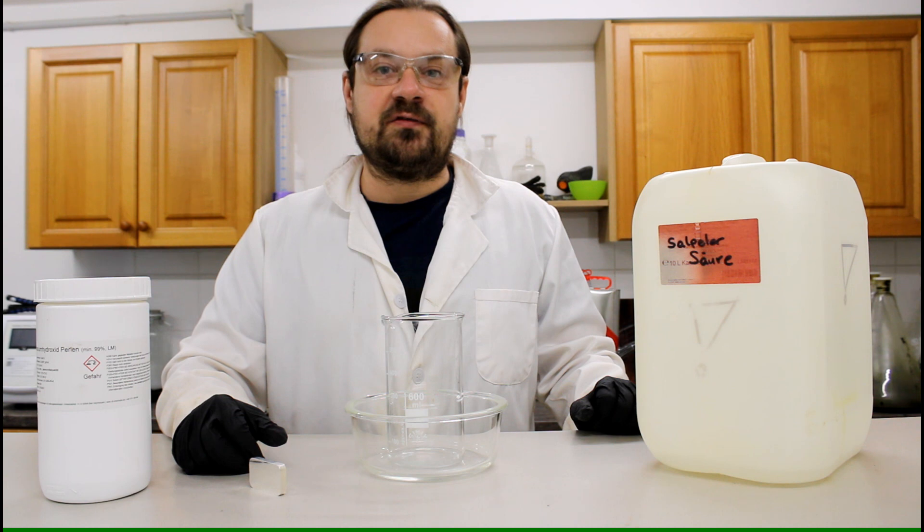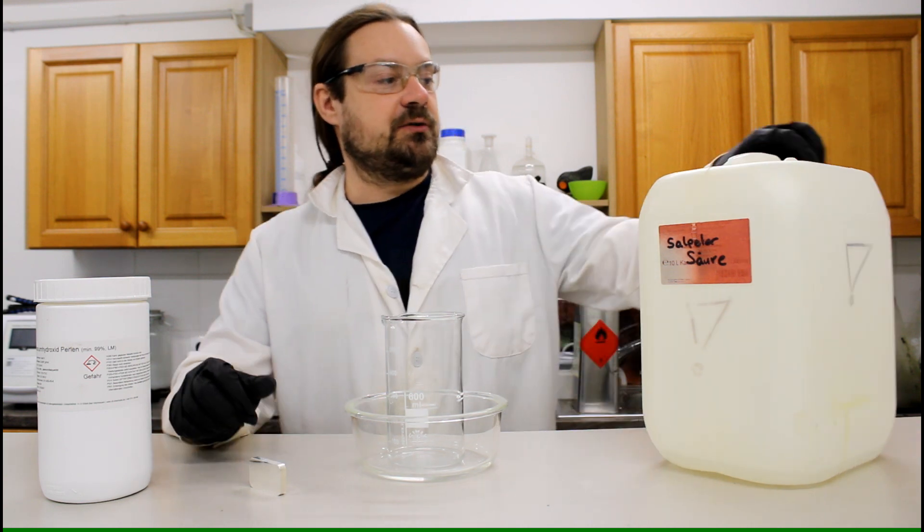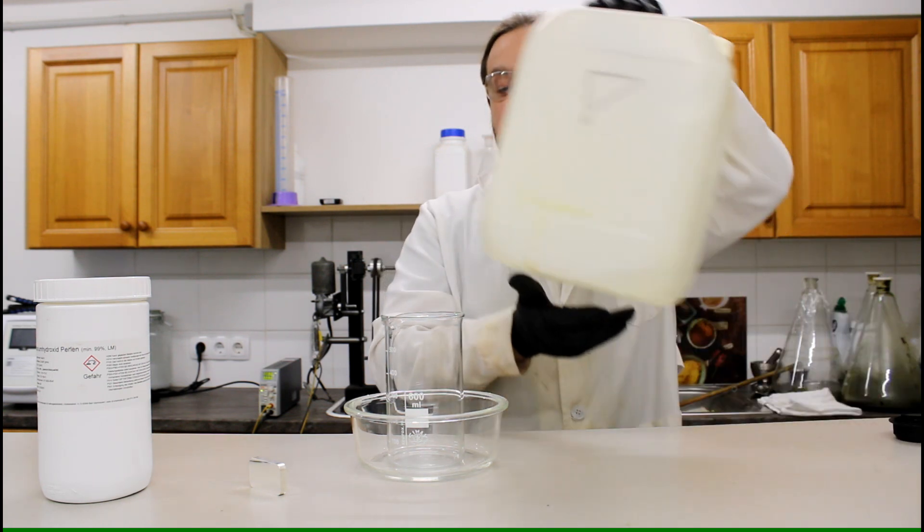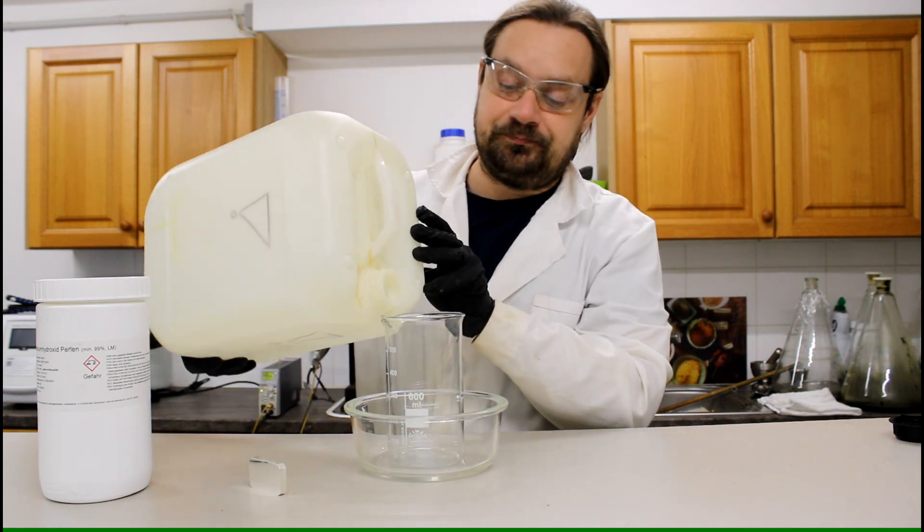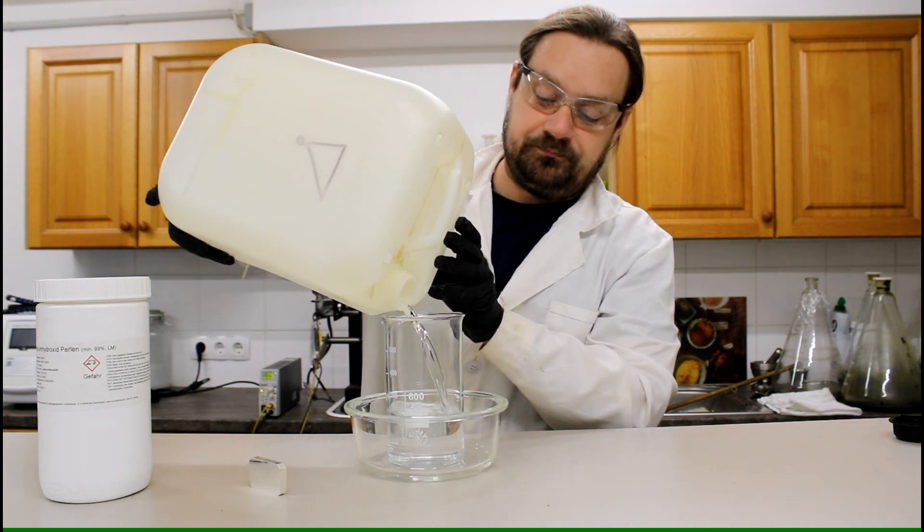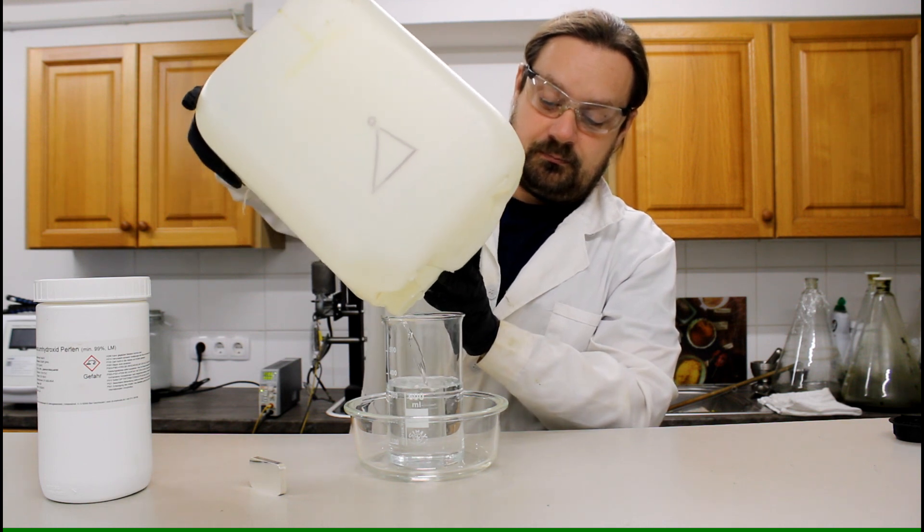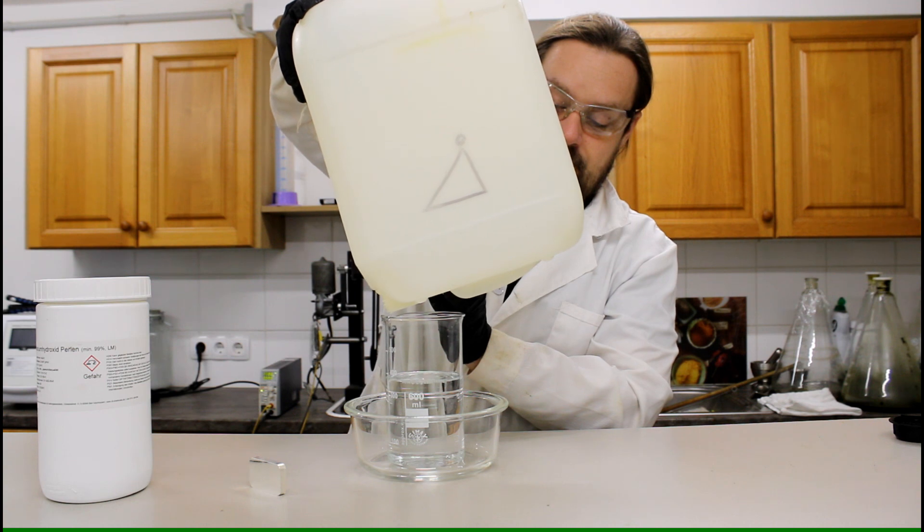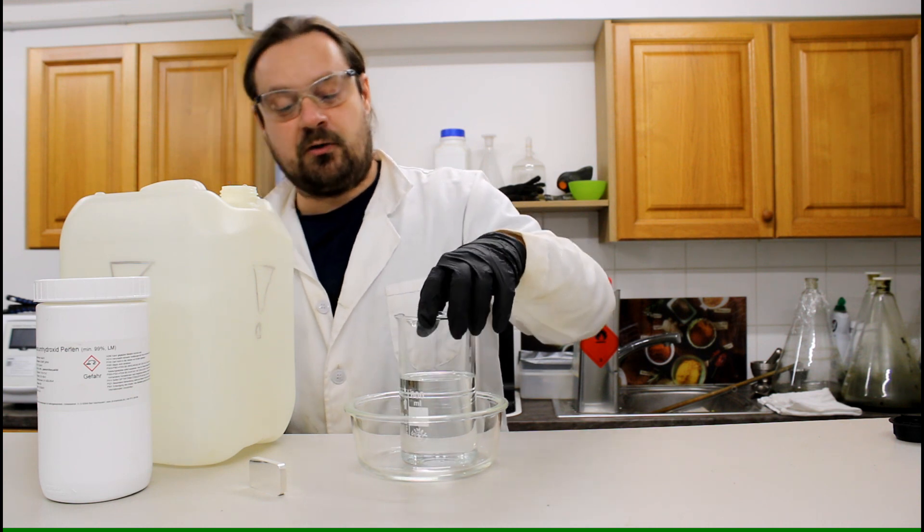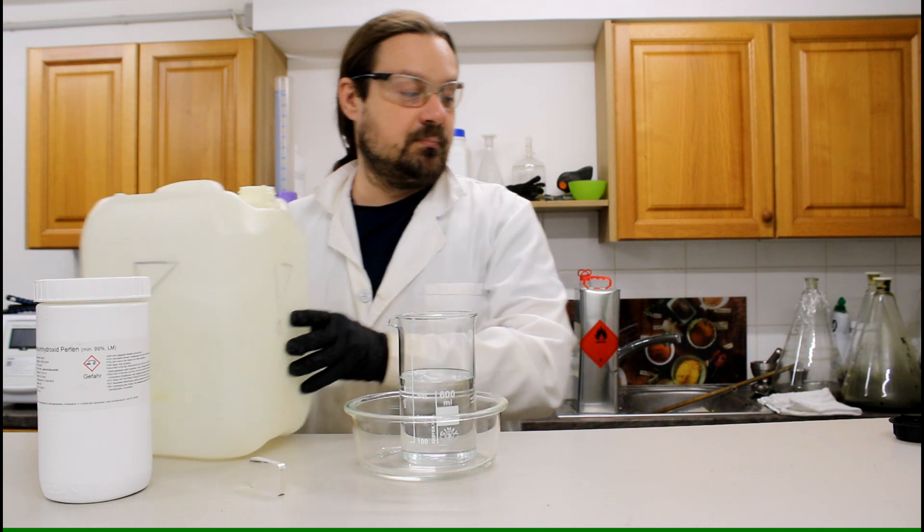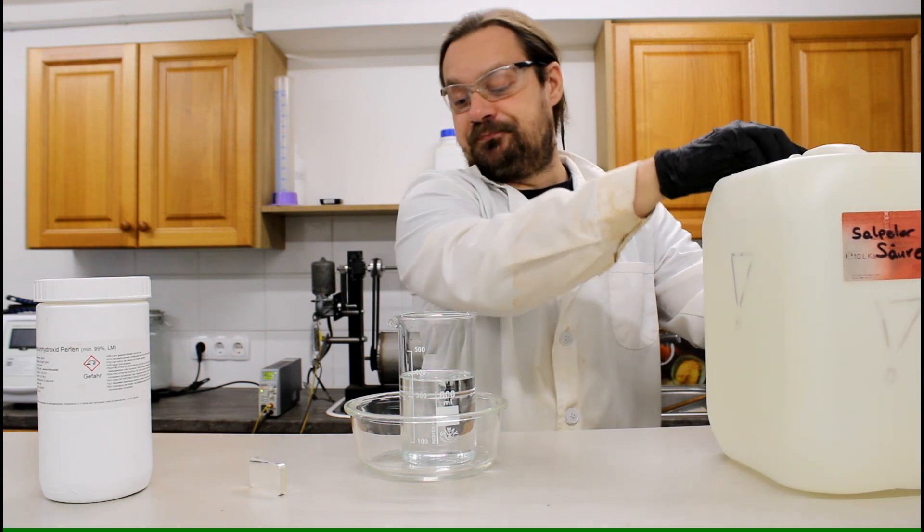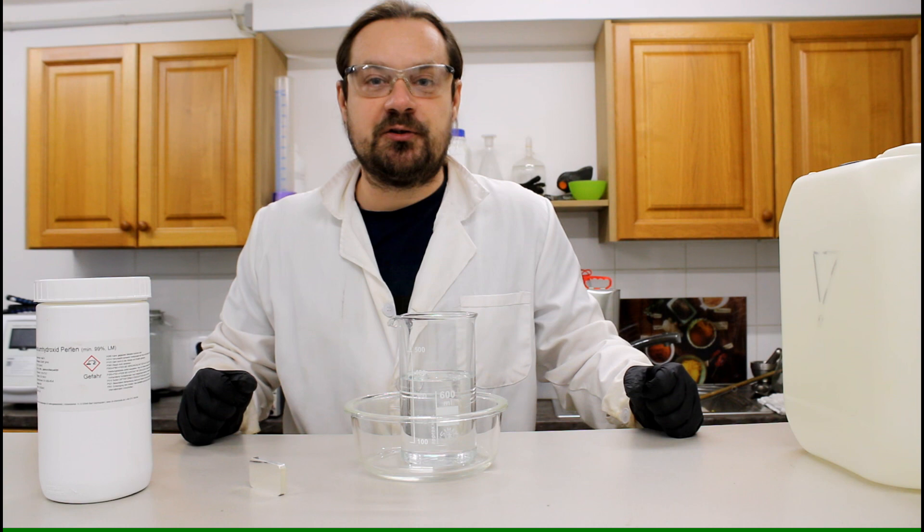It's important to work in a fume hood so I'm just going to pour out the nitric acid in the beaker and then we are going to the fume hood to dissolve the silver. Let's see how much we have left. Okay, almost 400 milliliters. Let's see if it's sufficient to dissolve 100 grams of silver. Okay, let's go to the fume hood.